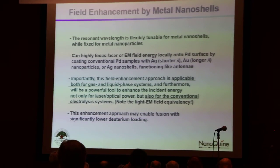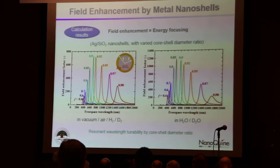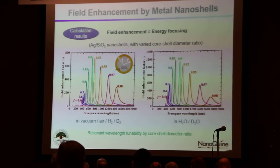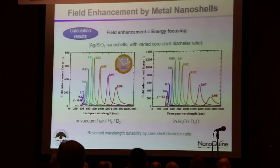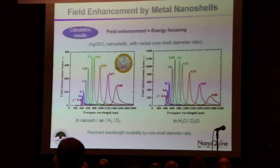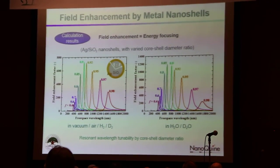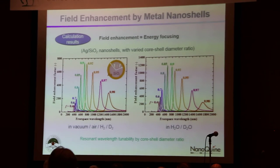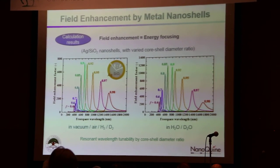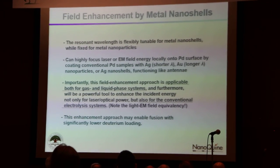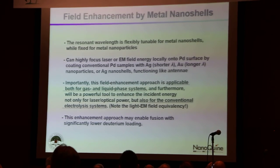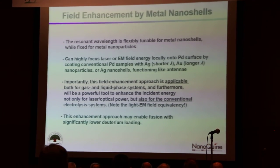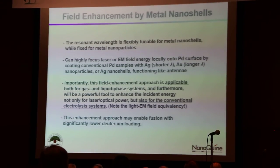The resonant wavelengths can be tuned simply by the ratio of the core and shell thickness or diameter. For example, if you use a laser to activate the reaction, for a given wavelength of the laser we can change the structure and simply tune the resonant wavelengths to have a higher enhancement effect — which is very useful and flexible in experiments. We can focus the laser or electromagnetic field energy locally onto or close to the surface of the platinum for conventional CF experiments.